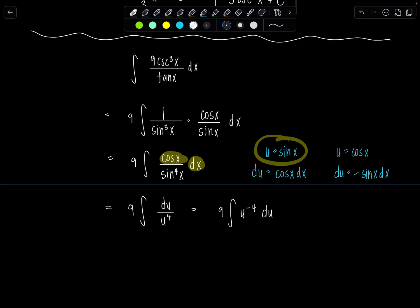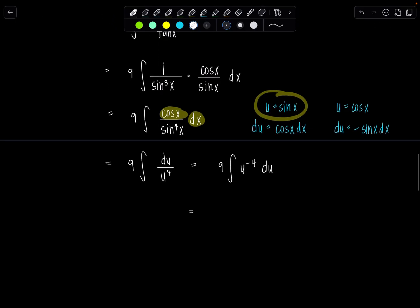Now add one to the exponent, divide by the new exponent, negative nine thirds, u to the negative third plus c. And then u was sine x. So the coefficient out front simplifies to negative three. I've got sine x to the negative third plus c.